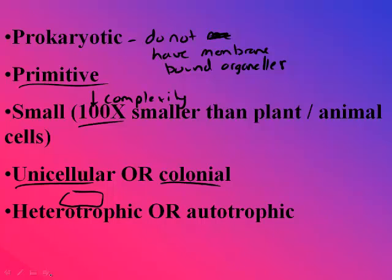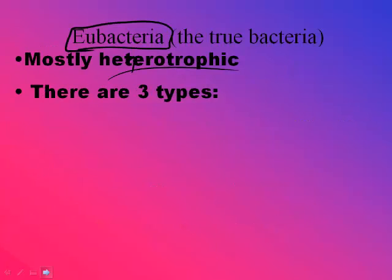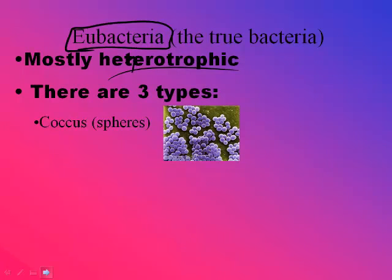They have two options: they can either be heterotrophic, which means that they have to gather their own food, or autotrophic, which means that they can synthesize their own food. It's mostly heterotrophic.